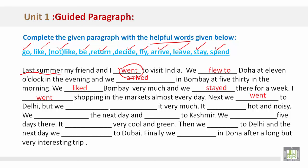Next, we went to Delhi, but we did not like it very much. It was hot and noisy. We left the next day and went to Kashmir. We stayed five days there. It was very cool and green. Then we returned to Delhi and the next day we went to Dubai. Finally, we arrived in Doha after a long but very interesting trip.